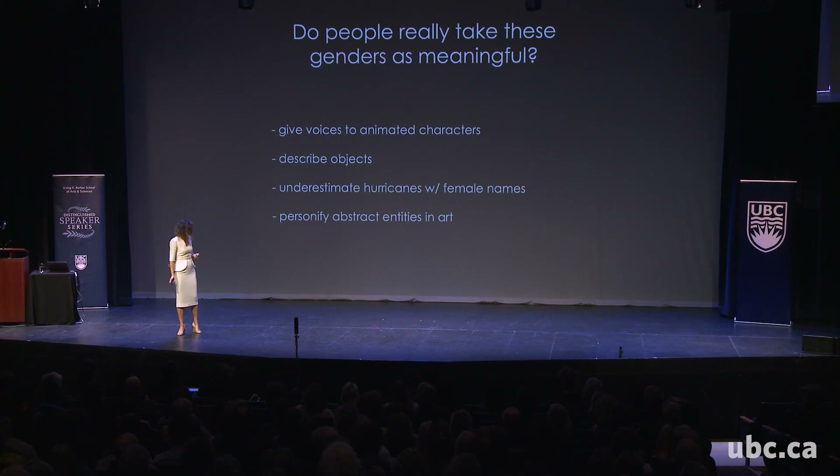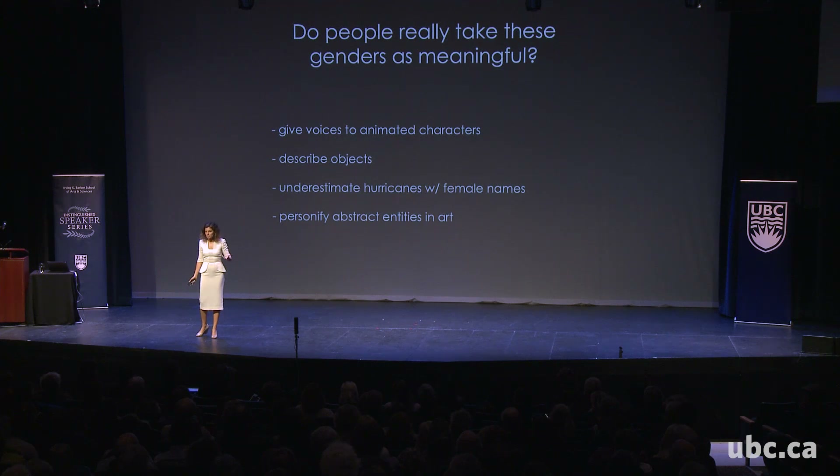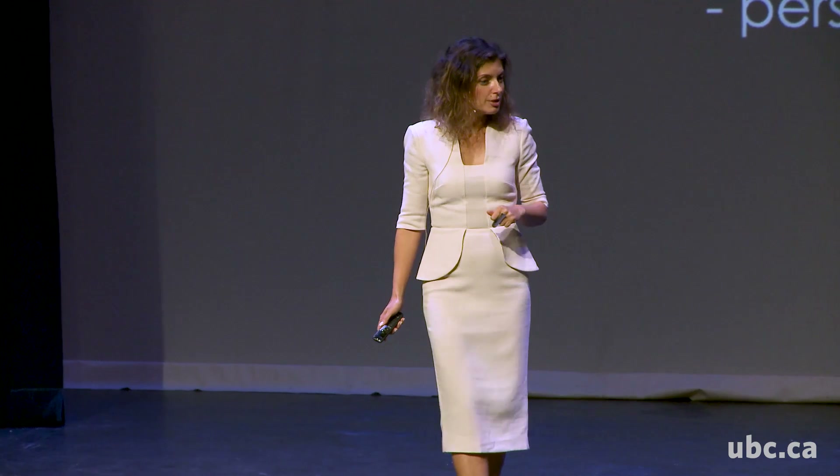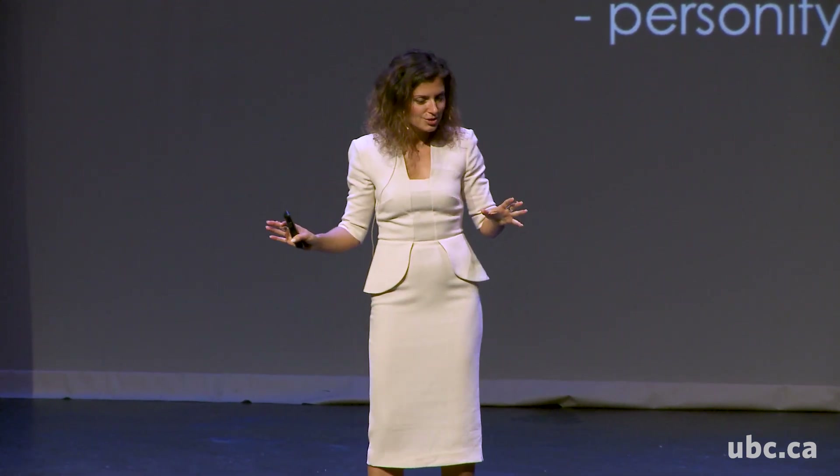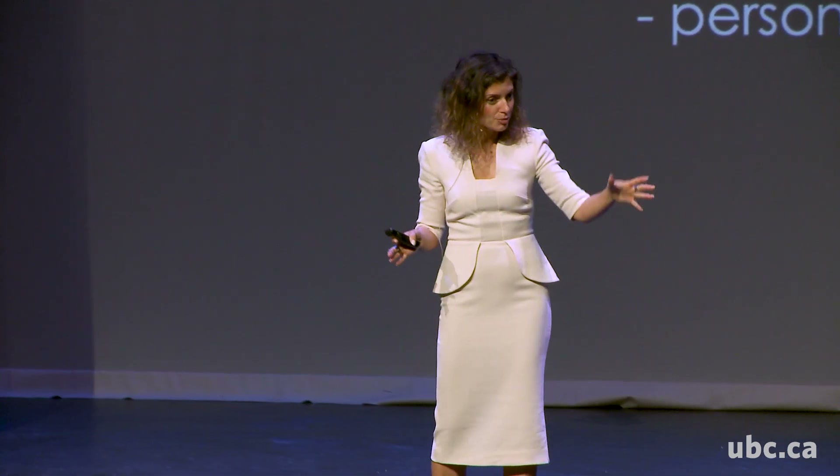Does this matter for how speakers of French, German, Russian, and Spanish think about the sun and the moon and everything else that can be named by a noun? It turns out that it does, and it starts very early. If you take young kids who are learning French or Spanish as their first language and say, 'We're making an animated movie and need your help assigning voices to these characters — here's an alarm clock, here's a toaster, what voices should they have?' Even very young kids start assigning voices appropriate to the grammatical gender in their language — a boy voice if it's grammatically masculine, a girl voice if it's grammatically feminine.